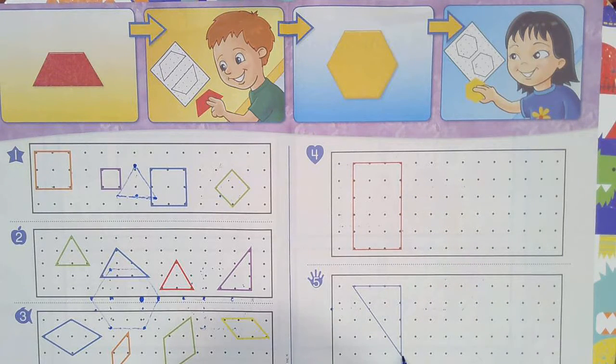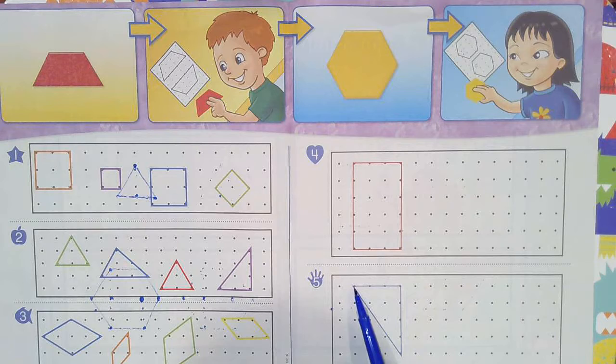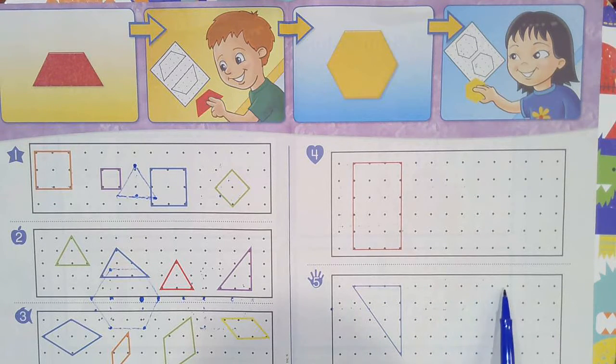And the same thing over here, you're going to count each straight side. So you'd probably do this one first, and then come over here and do it.